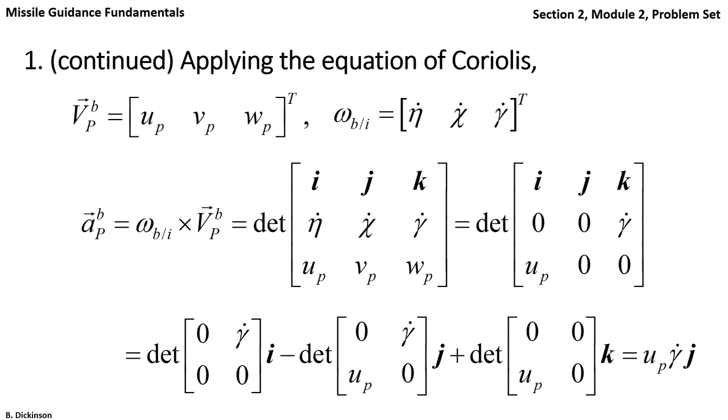Calculating the determinant with expansion by minors, we simply get an acceleration component in the j direction of the pursuer. That's the j direction of the body coordinate system.